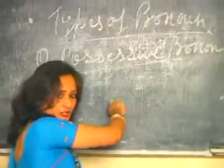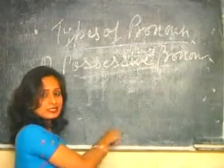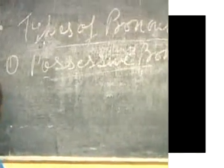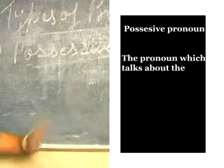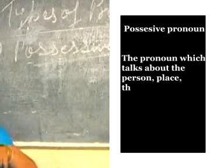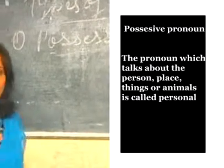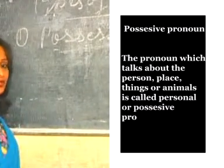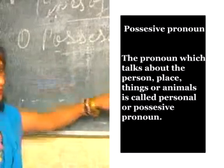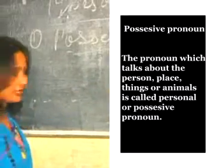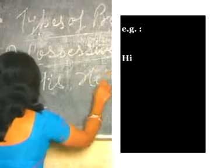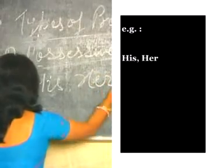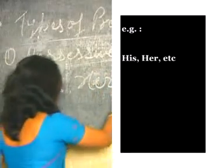The first type of pronoun is the possessive pronoun, also called the personal pronoun. The pronoun which talks about a person, place, thing, or animal is called the personal or possessive pronoun. For example: his, her, etc.